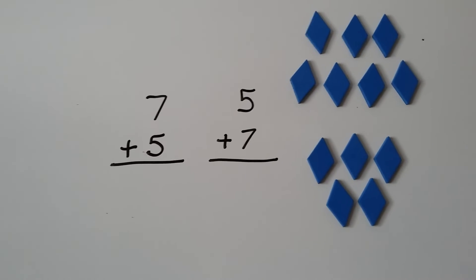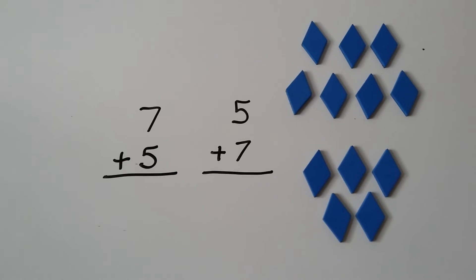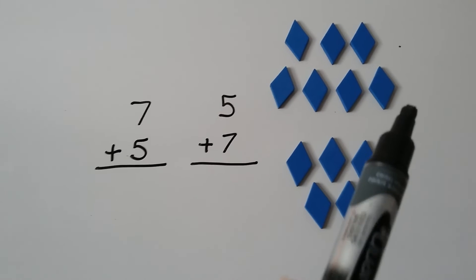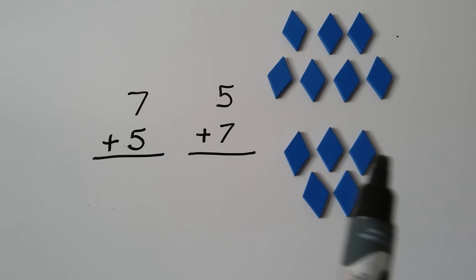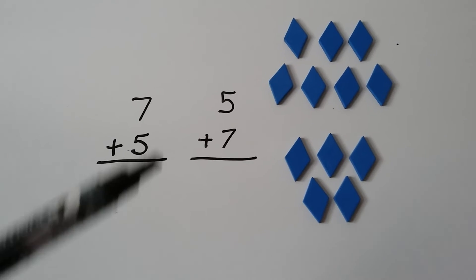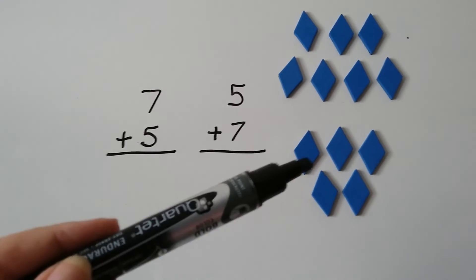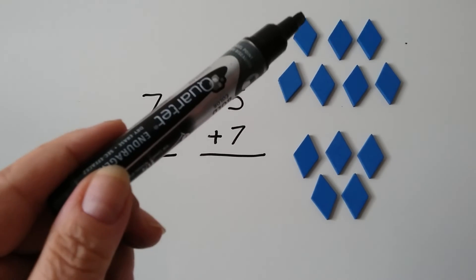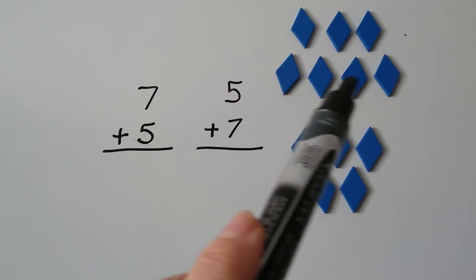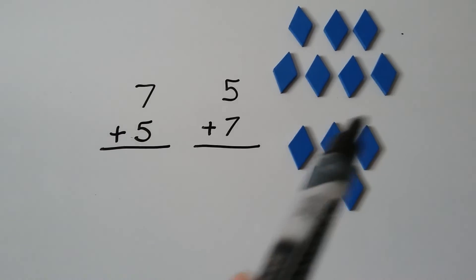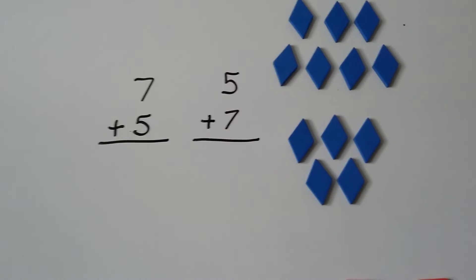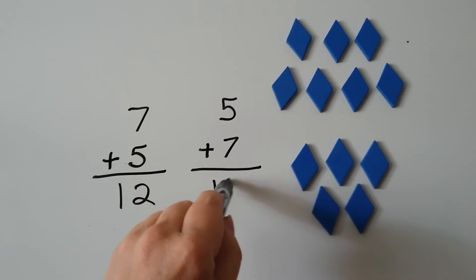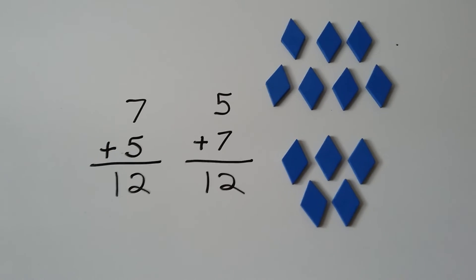Here we have seven plus five and five plus seven. We have seven and five — counting one through twelve. We can add the seven plus the five or the five plus the seven and we're still going to get twelve. Either way we do it, seven plus five or five plus seven, it's still going to be twelve.